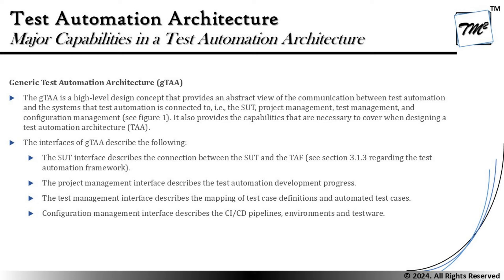The interface of the GTAA — where G is Generic and TAA stands for Test Automation Architecture — describes the following: The SUT interface describes the connection between the SUT and the TAF, where TAF stands for Test Automation Framework. The Project Management Interface describes the test automation development progress. The Test Management Interface describes the mapping of test case definitions to automated test cases. And the Configuration Management Interface describes the CI/CD pipelines, environments, and test work.